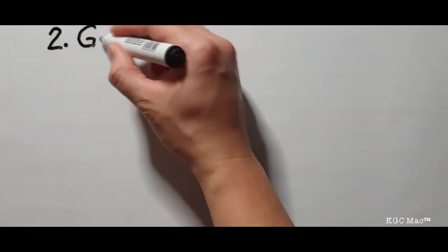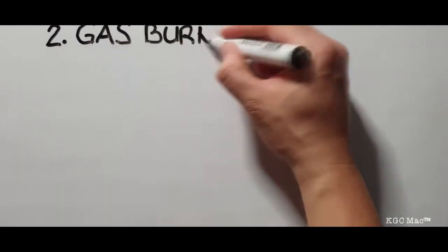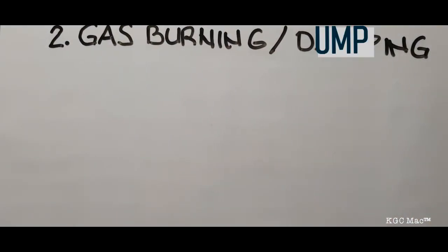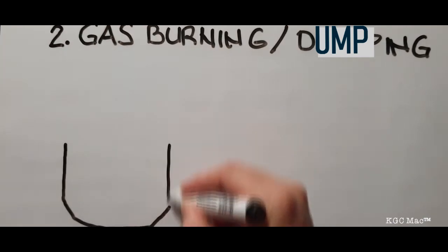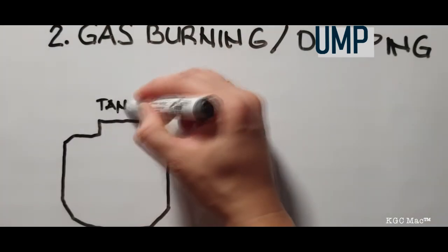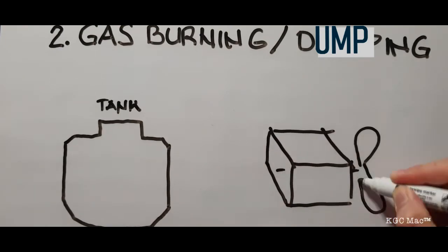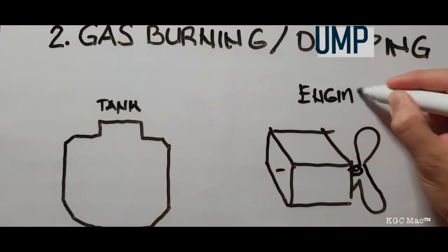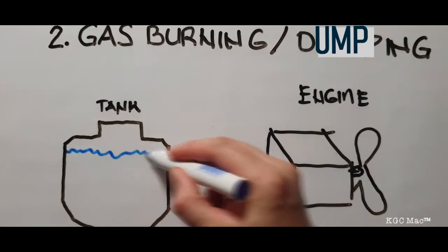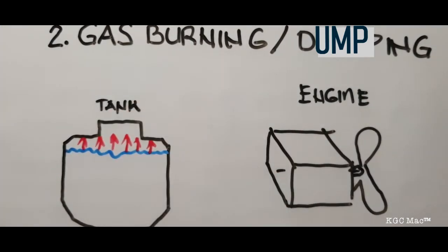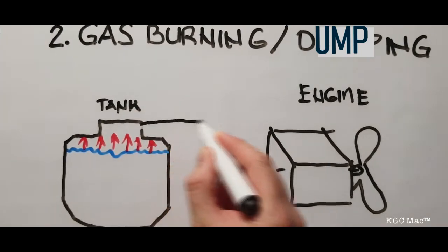Number two is gas burning and dumping. So as always, tank pressure is rising. We simply direct the flow of the tank pressure towards the engine room. After various stages, this vapor LNG will be used as a fuel, or we just simply burn it. That is why they call it dumping.